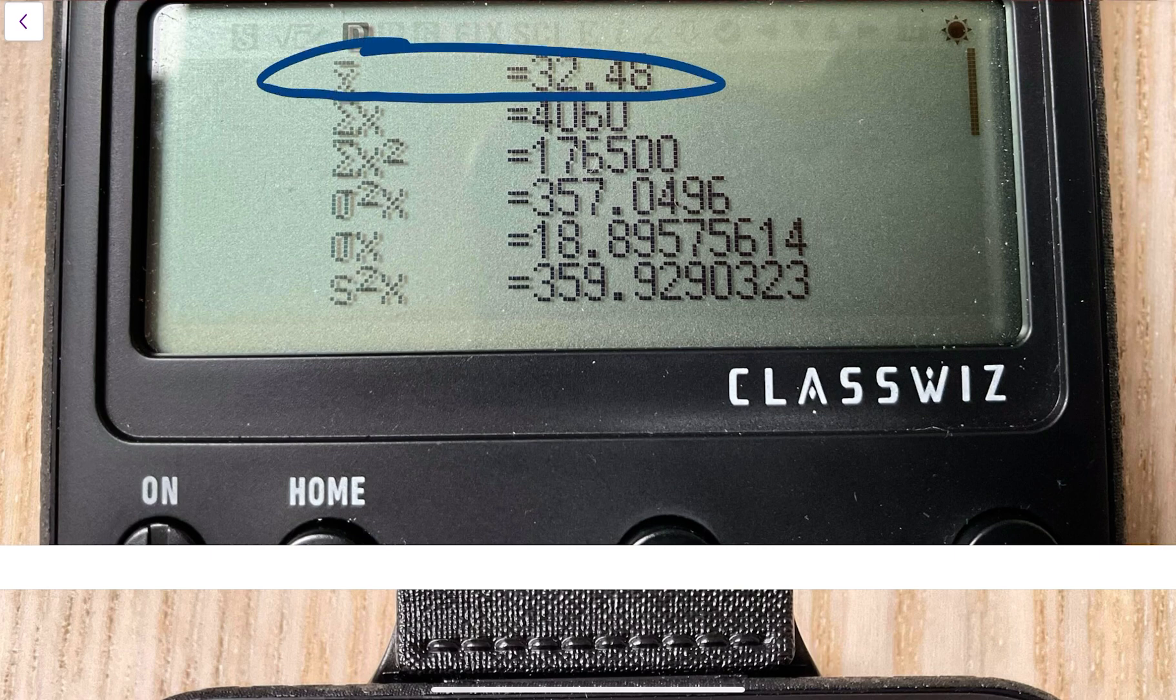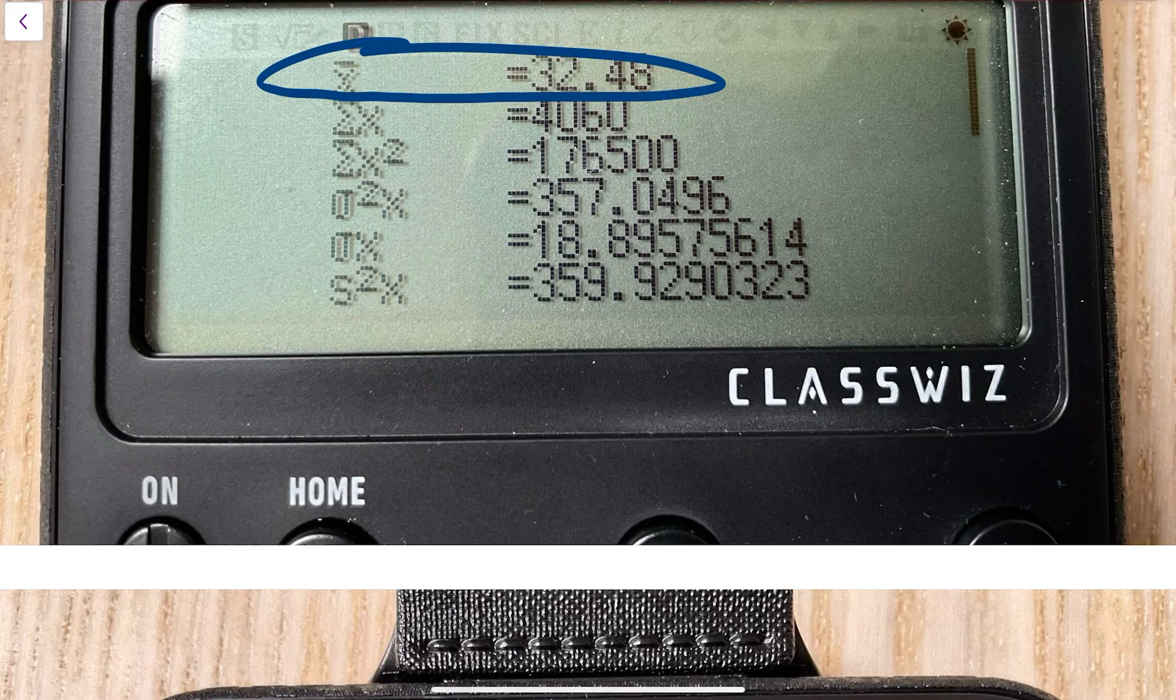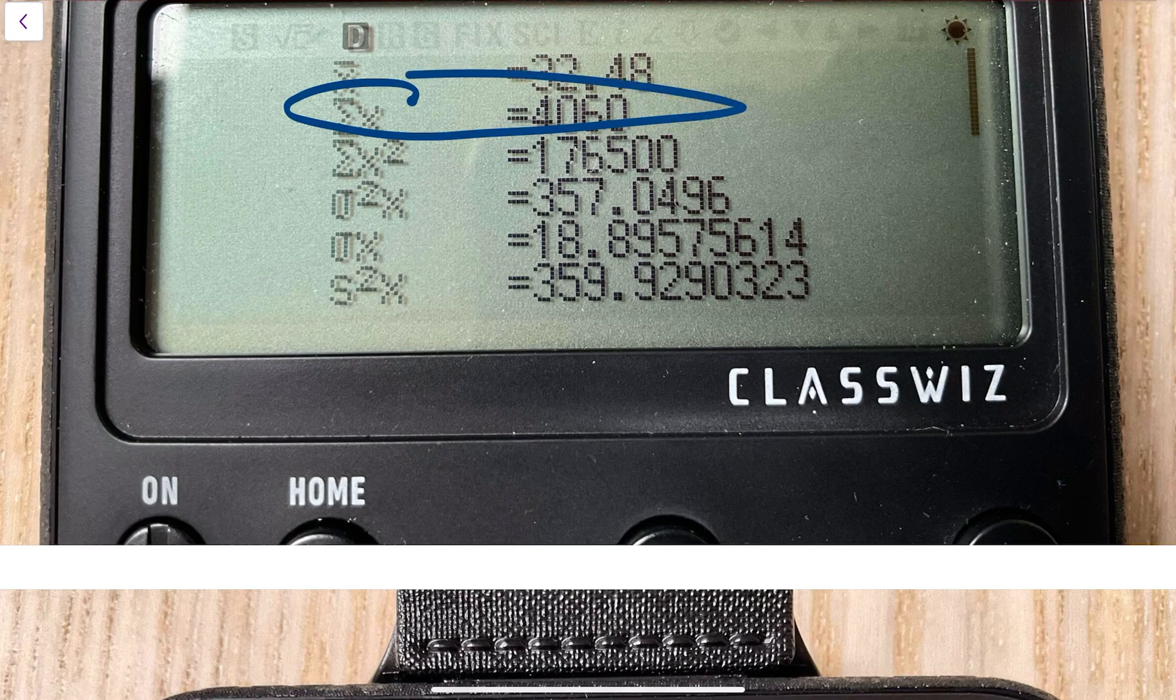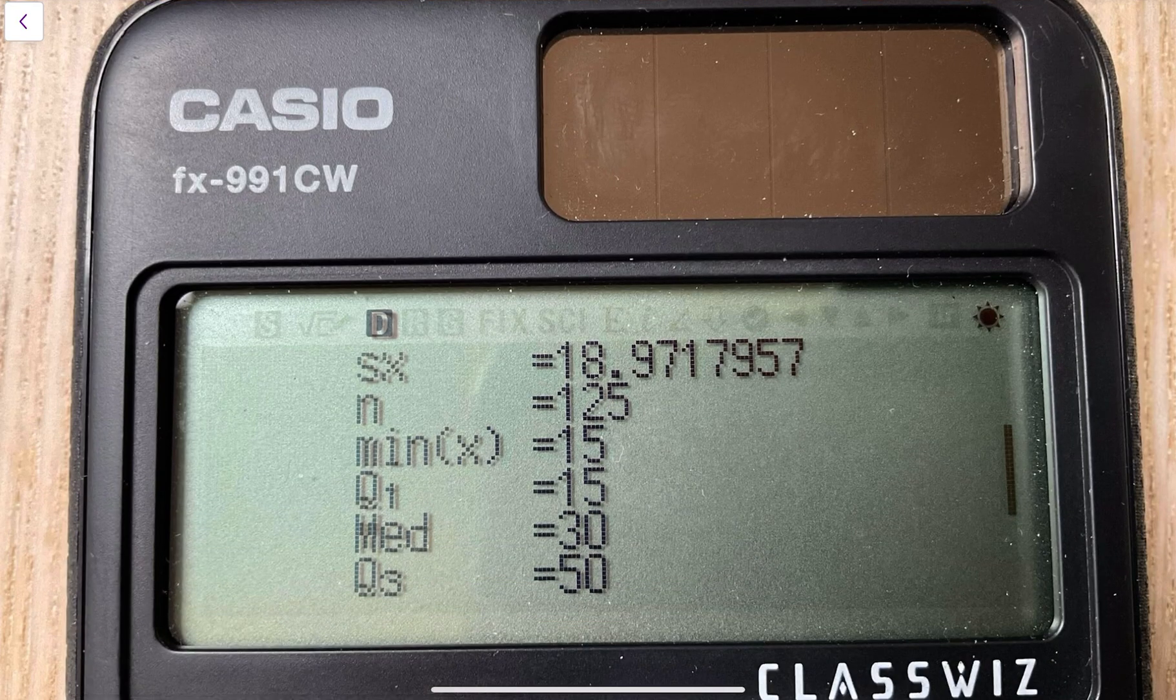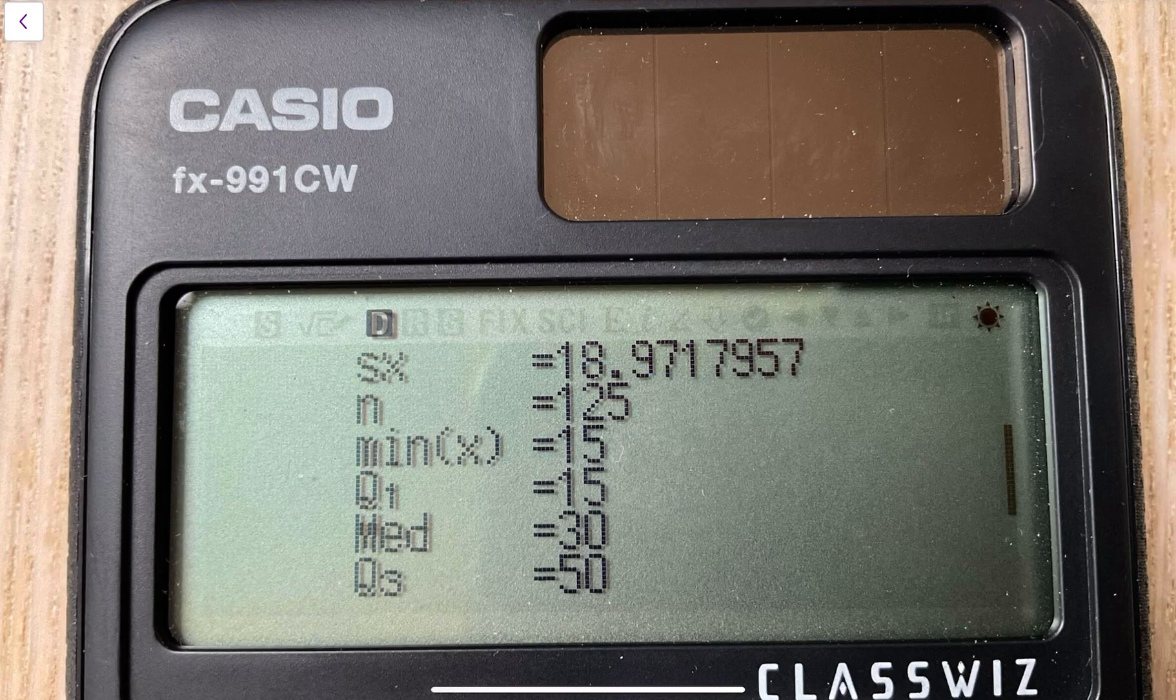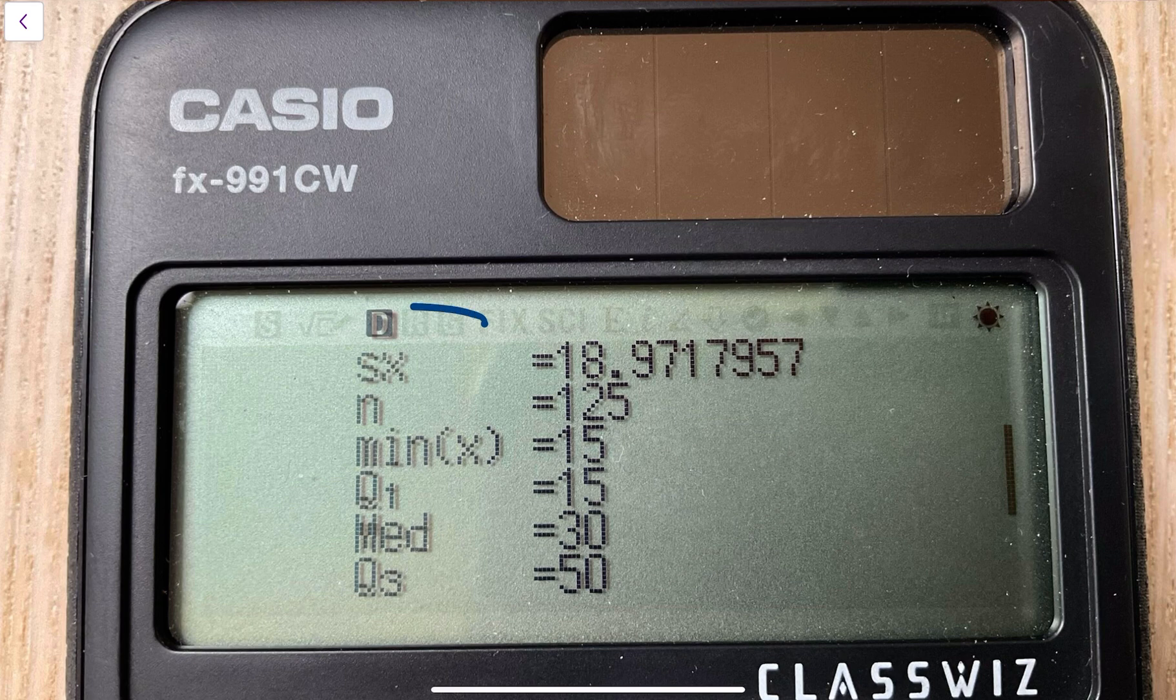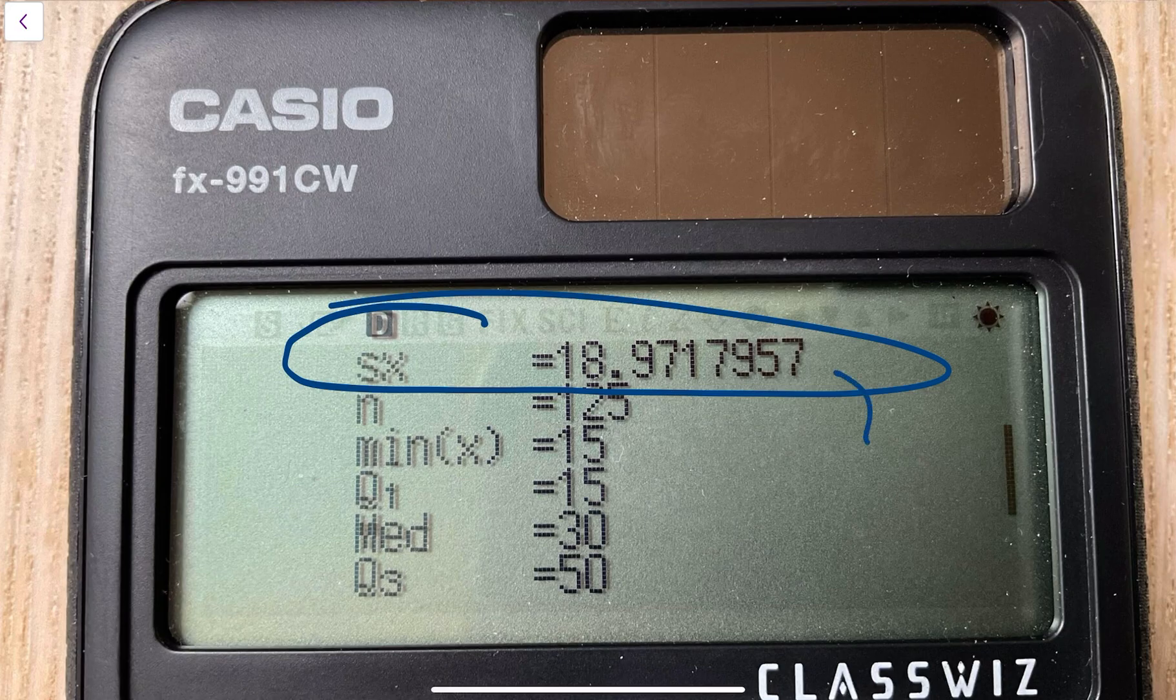We need to read off all of these things and I would just read them off in order. So the first thing, you just write 'from calculator' and then: x̄ = 32.48, σx = 4060, σx² = 176500. I would also put in n = 125. And we needed to use our sample to find an estimate for the population, which is going to be 18.97. So if you do that to 1 decimal place, that will go to 19.0.